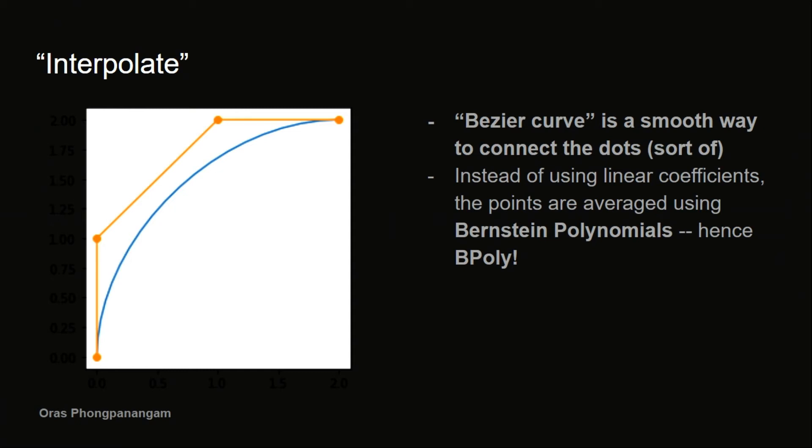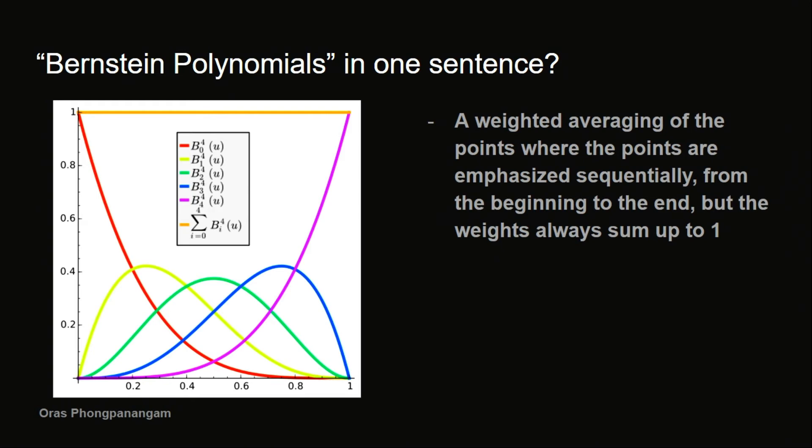So yeah, Bpoly means Bernstein polynomials. And it is kind of a complicated thing, but for Bernstein polynomials in one sentence, it is basically a way to do weighted averaging of the points, where the points are emphasized sequentially from the beginning to the end, but the weights always sum up to one.